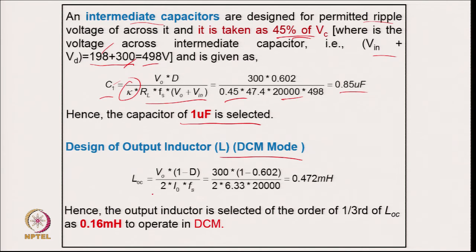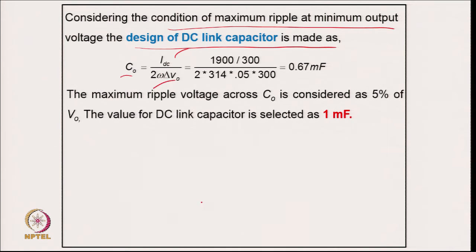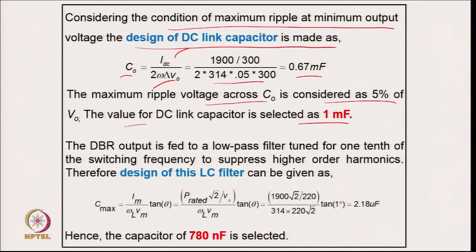For the output inductor in DCM, the boundary condition ripple is twice the output current (since the inductor current equals the output load current). Putting in all values gives 0.472 mH; to ensure DCM operation one-third of this is selected: 0.16 mH. For the output capacitor with 5 percent ripple: C_out = I_dc / (2 × ω × ΔV_0) gives 0.67 mF; with maximum ripple considered as 5 percent, the capacitor is selected as 1 mF.